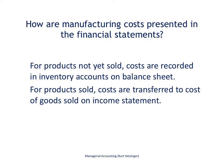Now let's talk about where manufacturing costs appear in the financial statements. For products not yet sold — whether raw materials sitting in the warehouse, products started but not finished, or products completely finished but unsold — those costs are recorded in inventory accounts, which appear on the balance sheet.